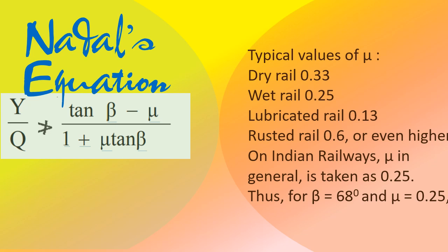On Indian Railways, the coefficient of friction in general is taken as 0.25. So for the standard flange angle β, the coefficient of friction μ is taken as 0.25.